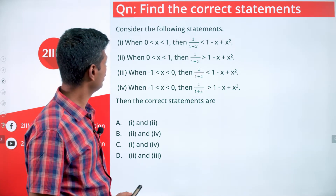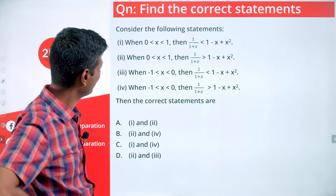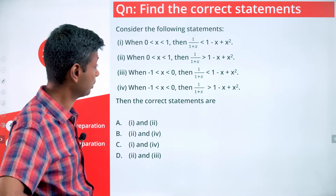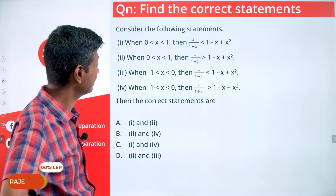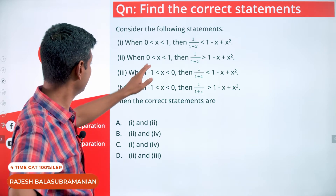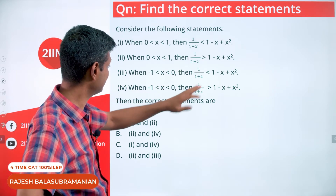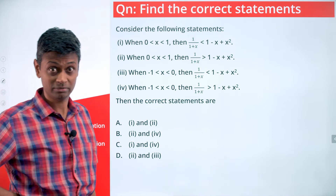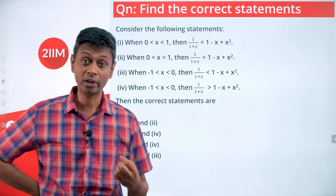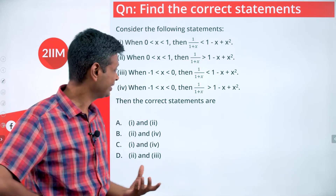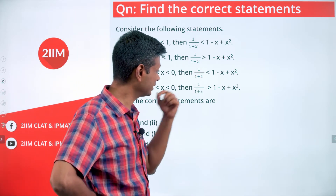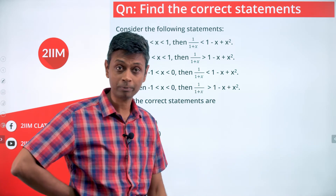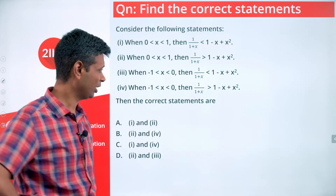Consider the following statements: 0 < x < 1, and 1/(1+x) compared with 1 - x + x². The question is whether 1/(1+x) is greater than or less than 1 - x + x² in this range. The expression is basically taking 1/(1+x) and comparing it with 1 - x + x². I want to simplify this and then determine the answer.